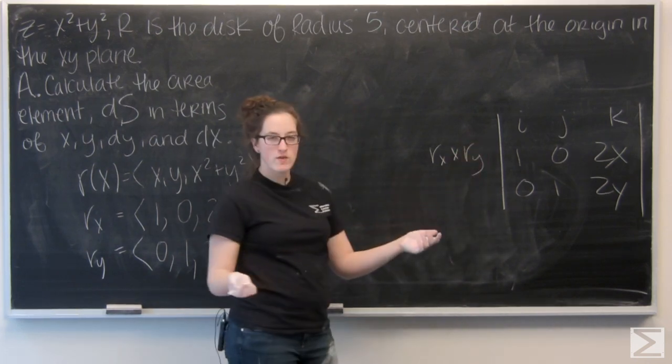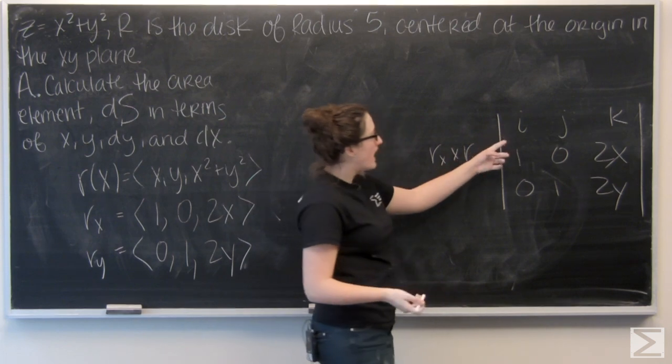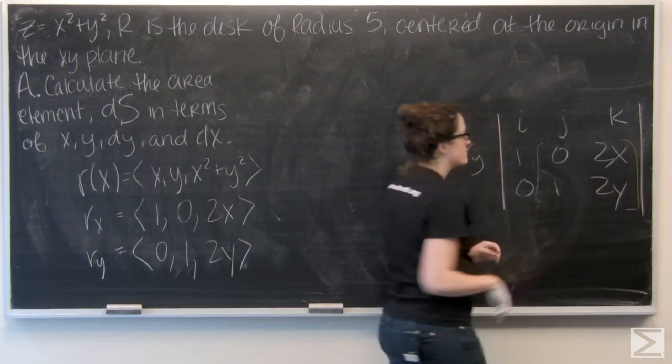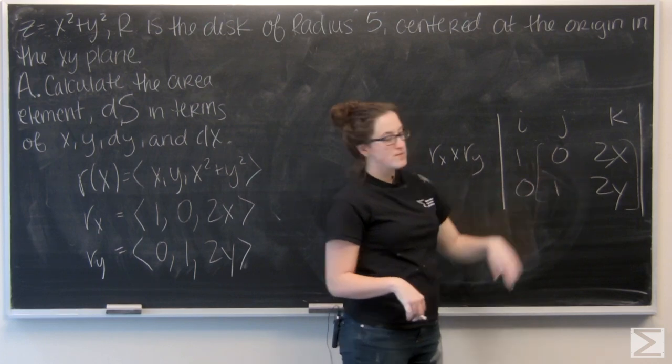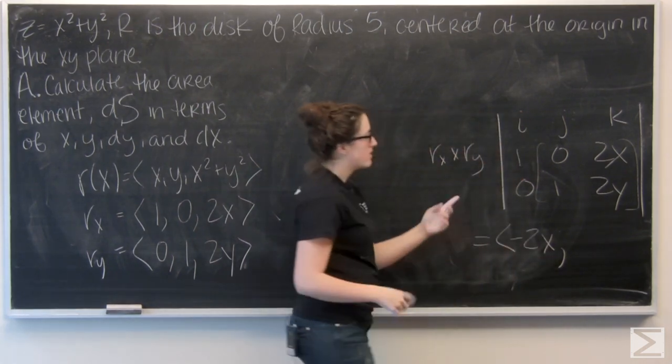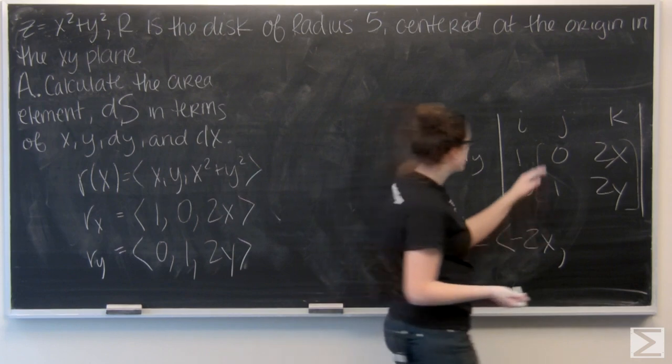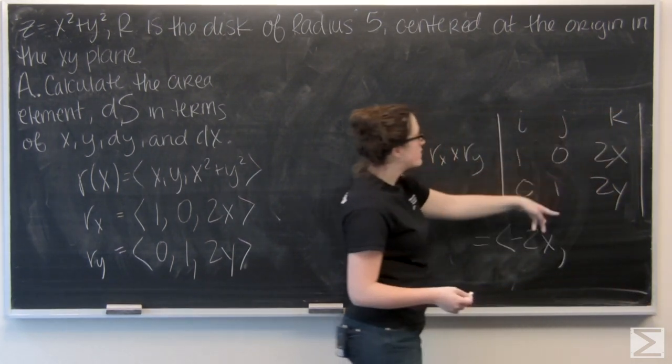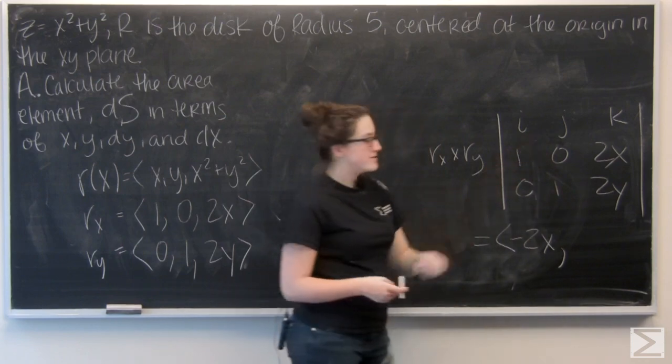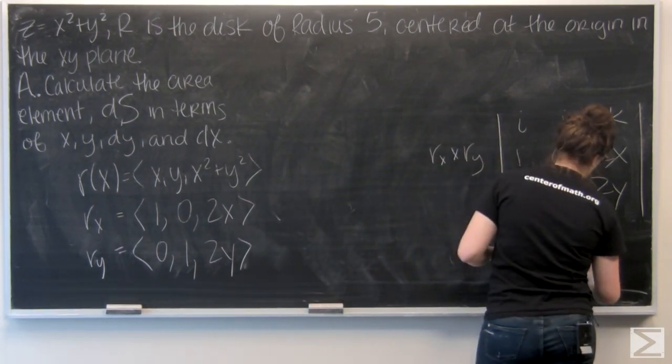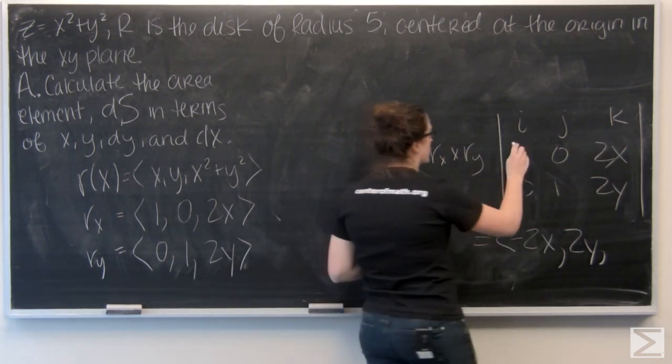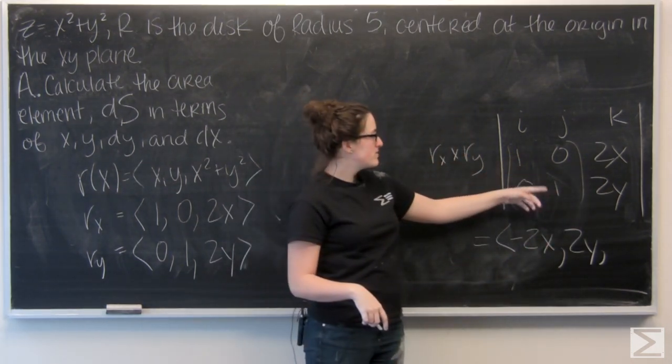So I kind of want to think of it like a cofactor expansion almost. So to find the i component, ignore this row and take the determinant of this little matrix. So I'm going to get 0 times 2y minus 2x. Okay, so I just have negative 2x. Now let's do j. It's kind of the same thing. Ignore the middle column. So I'm looking at a matrix 1, 2x, 0, 2y. So I have 1 times 2y minus 0 times 2x. Now let's do k. So here I'm covering up the third column. I'm looking at the determinant of this little matrix here. So I have 1 times 1 minus 0.